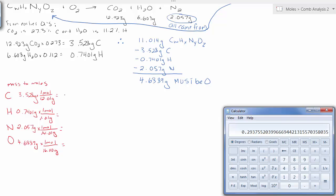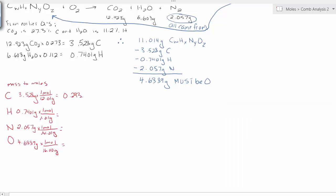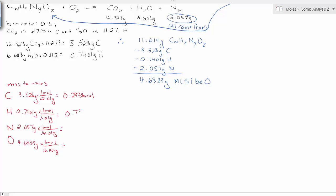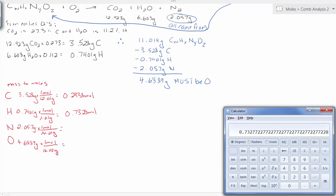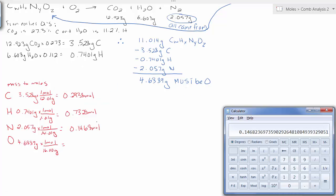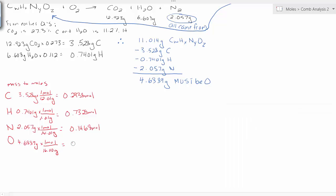So, 0.2938 moles of carbon. It's probably better to carry a few extra decimal places. Then we're going to get 0.7328 moles of hydrogen, 0.1468 moles of nitrogen, and 0.2931 moles of oxygen.